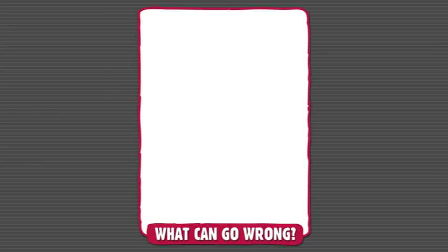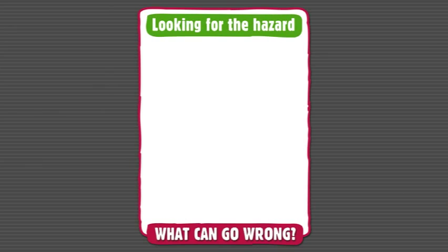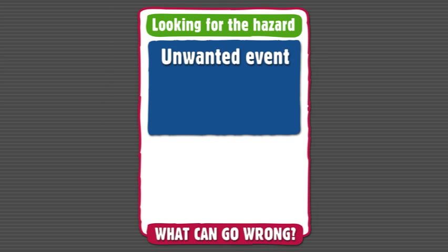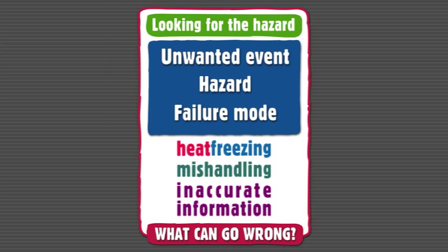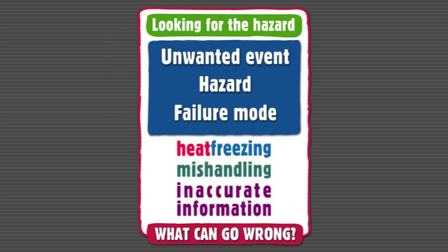The first question that you ask will involve looking for the hazard — you're asking, what can go wrong? When you ask that question, you're trying to find the hazard, and a hazard is defined as the source of harm. It is the source of that unwanted event or that failure mode.